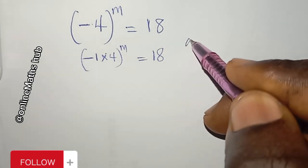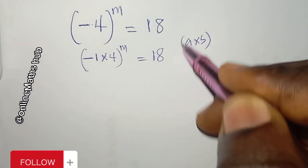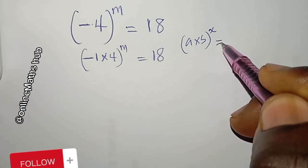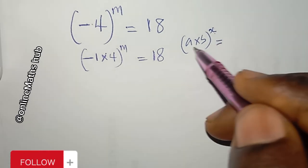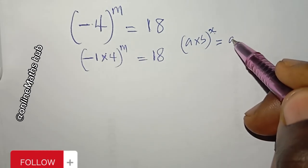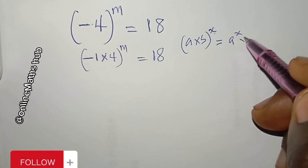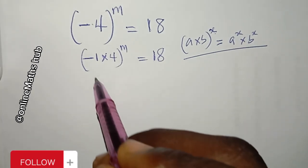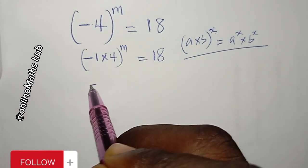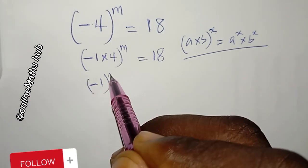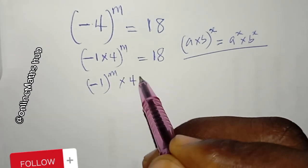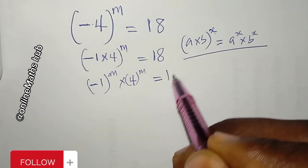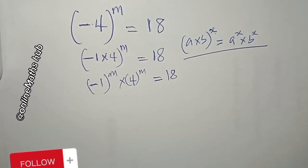Since (a × b)^x = a^x × b^x, I can distribute the exponent m, giving minus 1 to the power m multiplied by 4 to the power m, equal to 18.